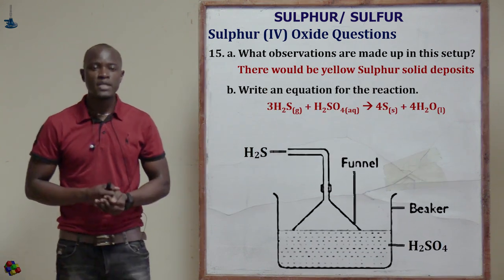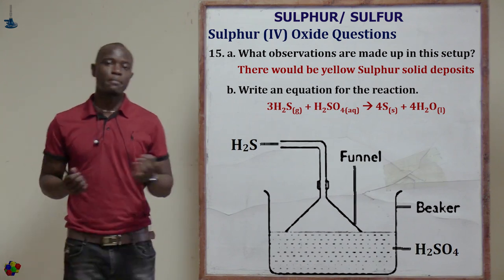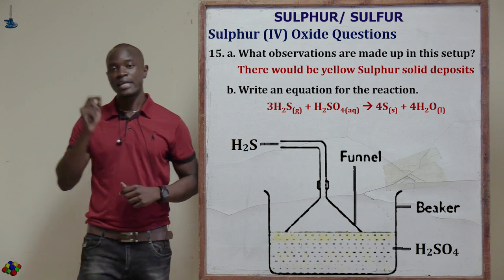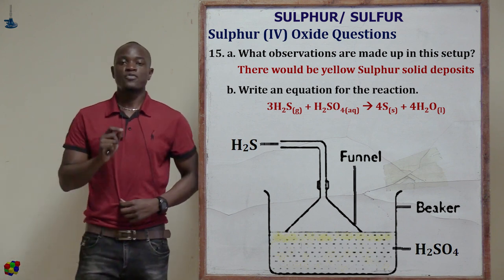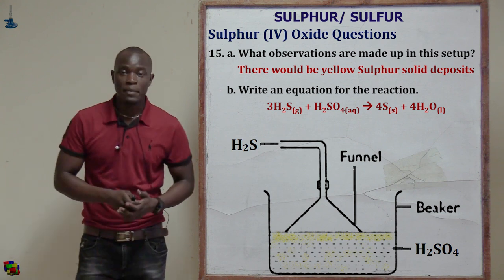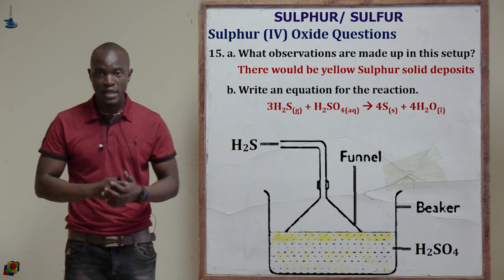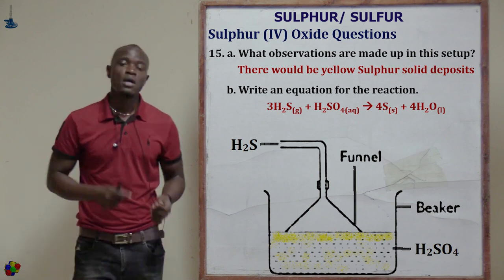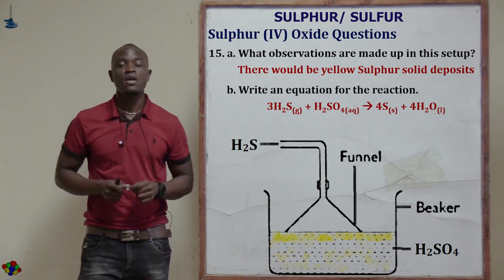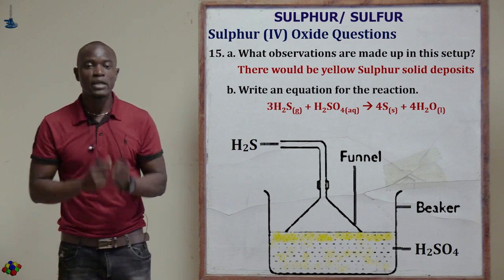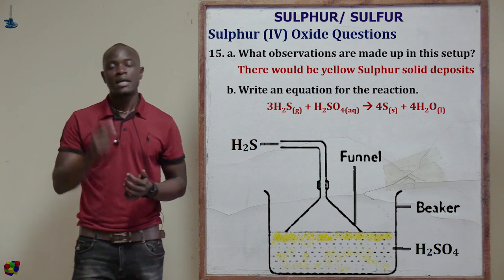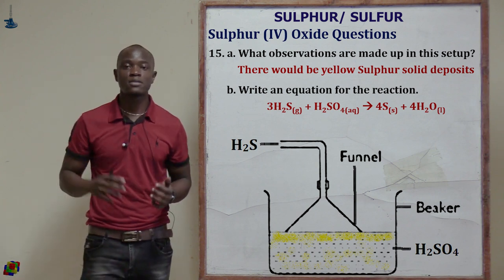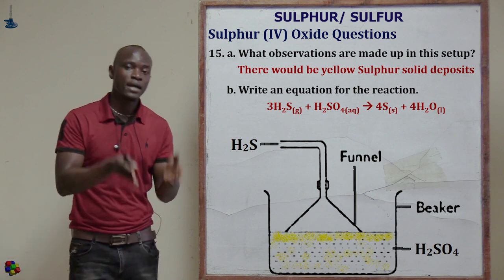Question fifteen asks: what observations are made in the setup where hydrogen sulfide is bubbled through sulfuric acid in a beaker? We are going to obtain yellow deposits of sulfur in the beaker. When hydrogen sulfide reacts with sulfuric acid, we get 4 molecules of sulfur and 4 molecules of water. Solid particles of sulfur are deposited on the top layers of the liquid.